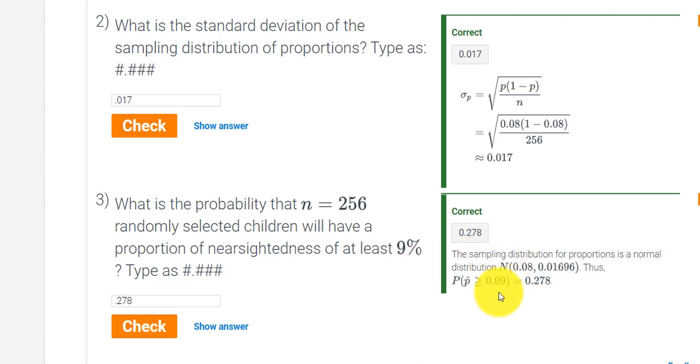So this would tell me the probability that the proportion of people that are nearsighted are at least 9% or greater. I hope that helps, thank you for watching.